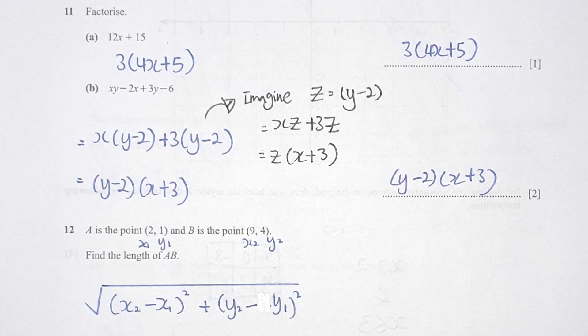For question 11 part a, factorize this: you need to extract 3 from both variables, then you will get a balance of 4x plus 5. For the next one, I extracted x from the first two variables leaving a balance of y minus 2, and I extracted 3 from the remaining variables getting a balance of y minus 2 as well. Since y minus 2 is repeating, I put them at the front and multiply with the balance of x plus 3.